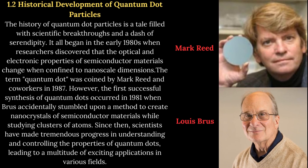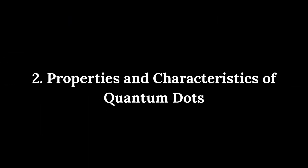1.2 Historical Development of Quantum Particles. The history of quantum particles is a tale filled with scientific breakthroughs and a dash of serendipity. It all began in the early 1980s when researchers discovered that the optical and electronic properties of semiconductor materials change when confined to nanoscale dimensions. The term 'quantum dot' was coined by Mark Reed and co-workers in 1987. However, the first successful synthesis of quantum dots occurred in 1981 when Lewis Bruss accidentally stumbled upon a method to create nanocrystals of semiconductor materials while studying clusters of atoms. Since then, scientists have made tremendous progress in understanding and controlling the properties of quantum dots, leading to a multitude of exciting applications in various fields.